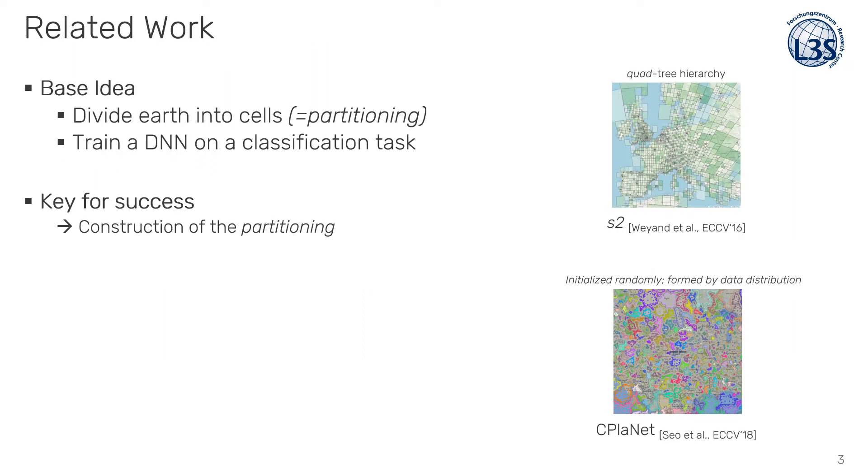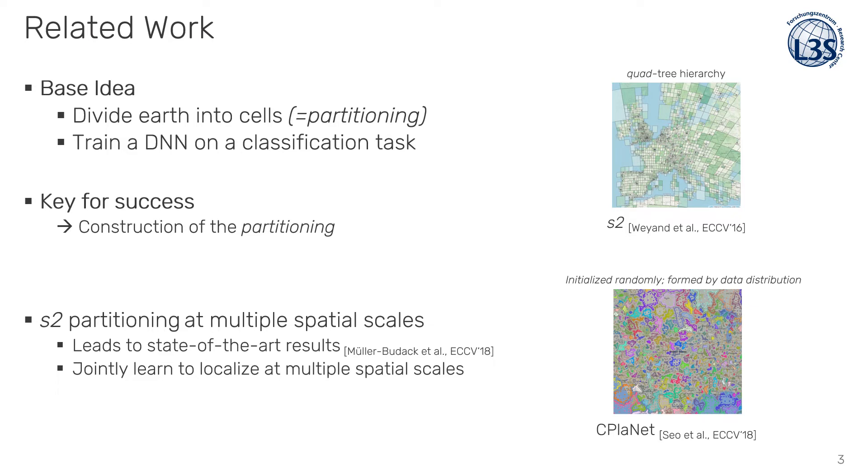Our task of geolocation estimation is not restricted to, for instance, landmarks. Related work divides the Earth into cells, which is called partitioning. And the basic idea is to train a CNN on some kind of classification. It revealed that the construction of the partitioning is the key for success. The S2 method, as shown in the upper right, divides the Earth into a hierarchy of quadtrees based on a dataset distribution, where CPlanet, the lower right, initializes results randomly and performs refinement also based on the dataset distribution. It also turned out that a multipartitioning of the S2 partitioning leads to state-of-the-art results, as the model jointly learns to localize at multiple spatial scales.